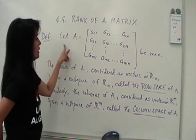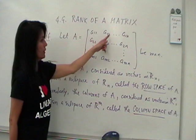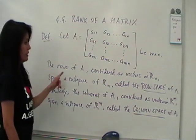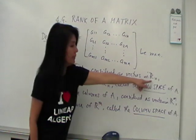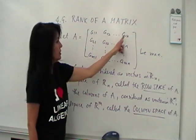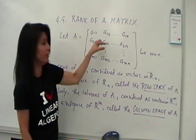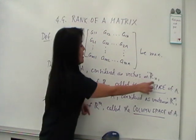If we have A is an m by n matrix, we have the rows and the columns. The rows of A, if we consider them as vectors in R sub n, notice there are n entries here. So if we look at the row vectors, the rows rather, they are like vectors in R sub n.